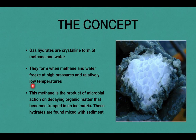Water is frozen and this freezing occurs at high pressure and relatively low temperature. This means it may be found at deeper oceans in the continental margins or below permafrost. So you can find gas hydrates at two places: along the continental margins and in the polar region in the permafrost area.